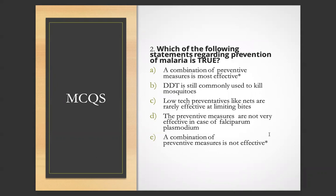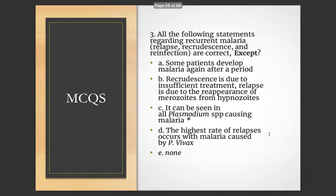MCQ 2: Which of the following statements regarding prevention of malaria is true? A) A combination of preventive measures is most effective. B) DDT is still commonly used to kill mosquitoes. C) Low-tech preventives like nets are really effective at limiting bites. D) Preventive measures are not very effective in case of P. falciparum. E) A combination of preventive measures is not effective. Answer: A — a combination of preventive measures is most effective.